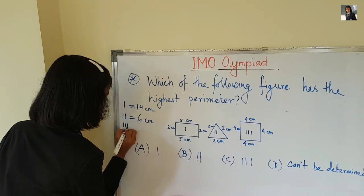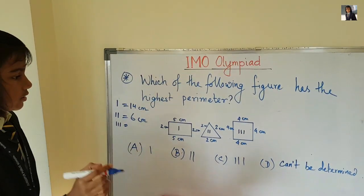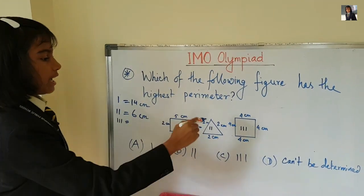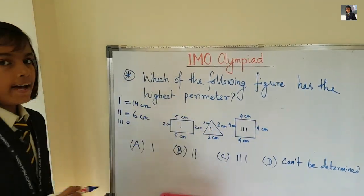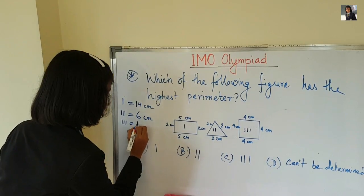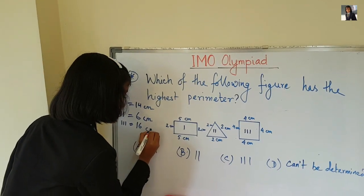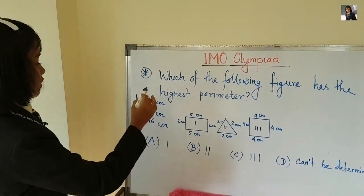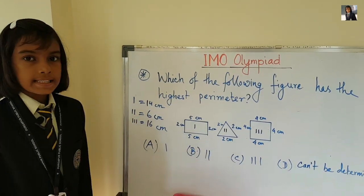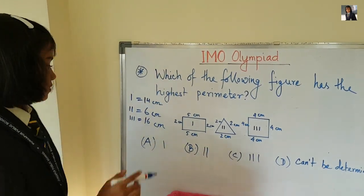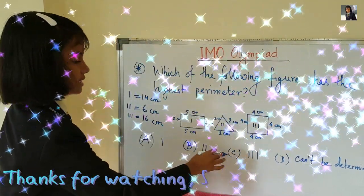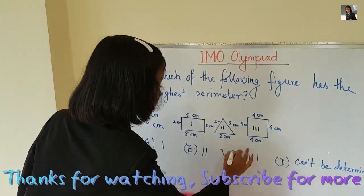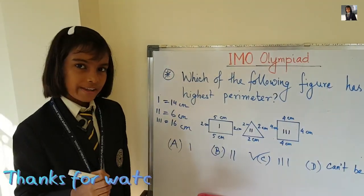For the third figure: 4, 4, 4, 4 — all sides are the same length, and four fours are 16. So the perimeter of the third figure is 16 centimeters. The third figure has the highest perimeter, which is figure C. So the answer is C.